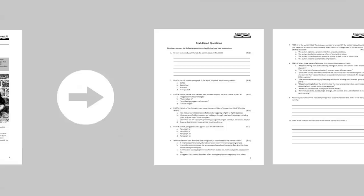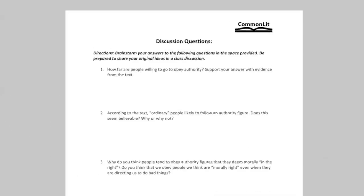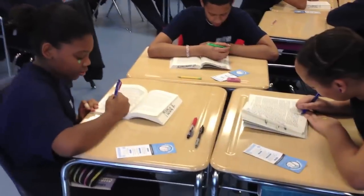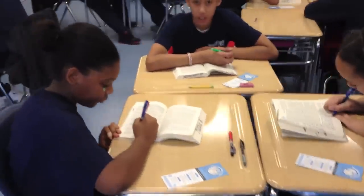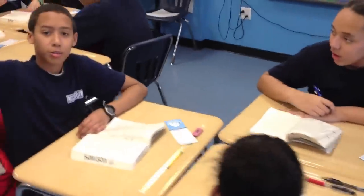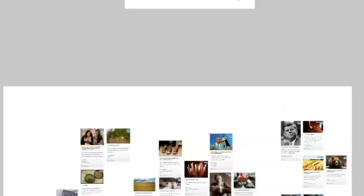For each text, we've crafted questions compatible with college and career standards in every state that require students to go back to the text and analyze arguments and evidence. CommonLit's tools also help students make original arguments and support those arguments in speech and debate. Teachers can use our discussion questions in small groups or to lead a Socratic seminar. Teachers can also check out our teacher guide, where we've recommended paired passages, relevant multimedia, and more.